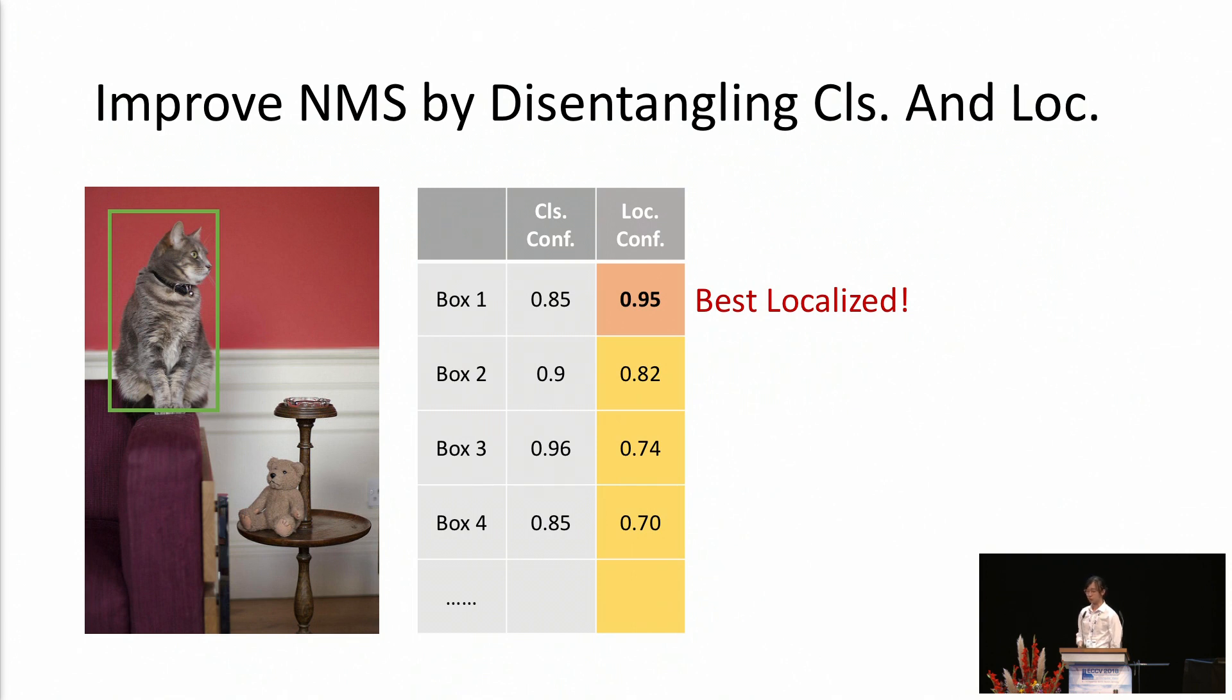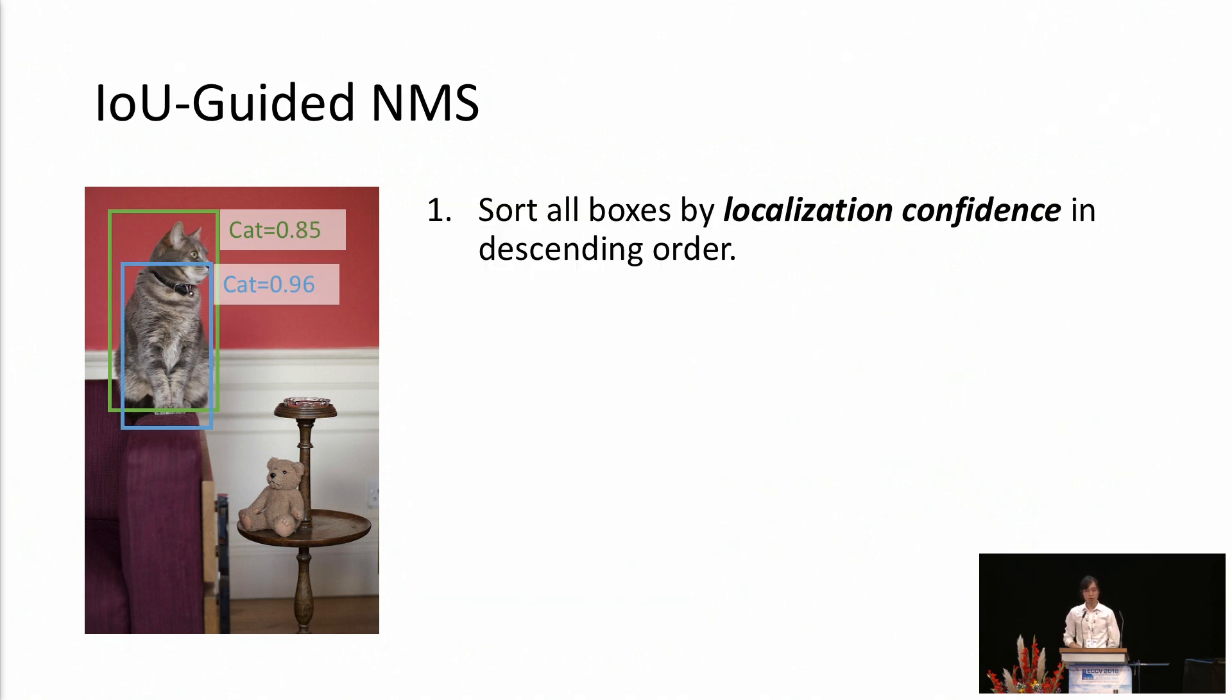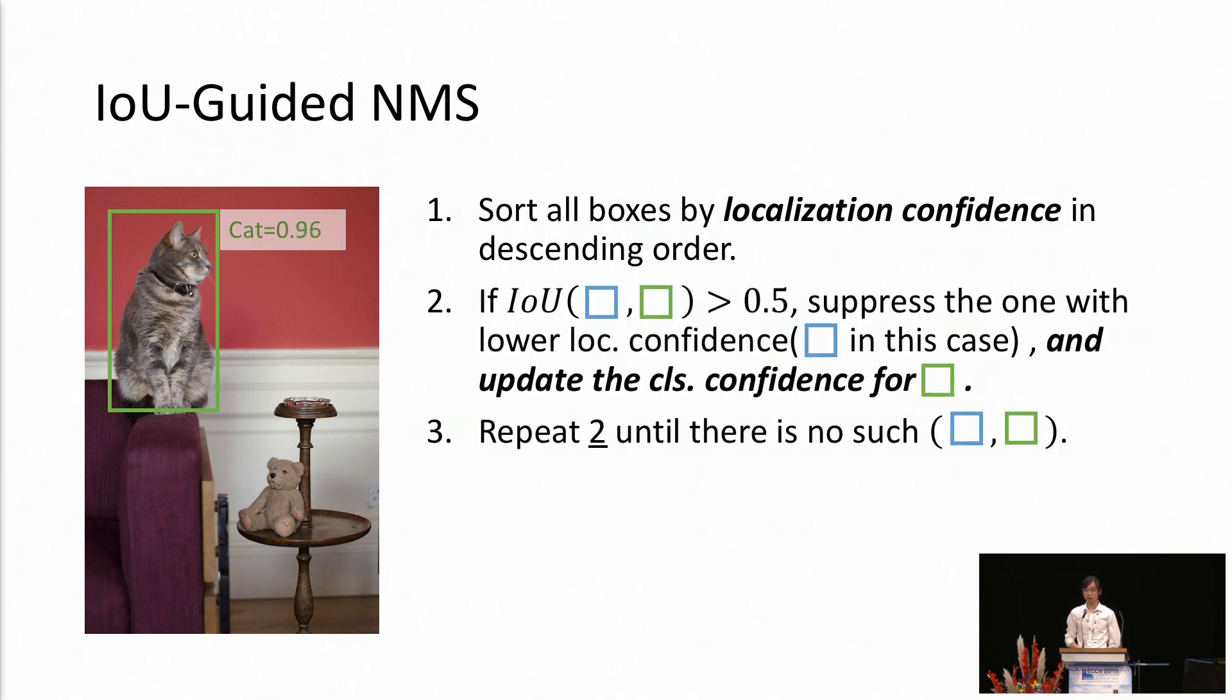The intuition of our NMS is like this. For multiple detections of the same object, first, we look at the localization confidence and we only keep the box which is best localized. Next, we look again at the classification confidence column and we choose the most confident class label for this box. This algorithm, we call it IOU-guided NMS. It begins with sorting all boxes by their localization confidence in descending order. If we find two boxes having a high IOU, we suppress the one with lower localization confidence instead of the classification confidence in the case of the traditional NMS. And here, we need to update the classification confidence for the remaining box.